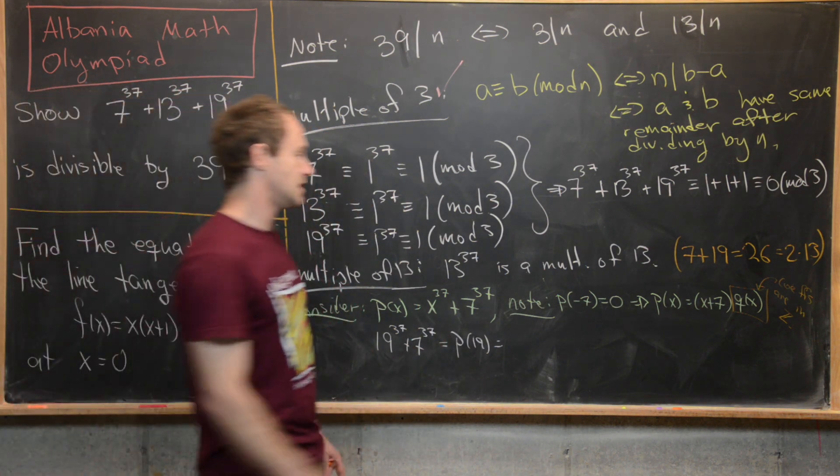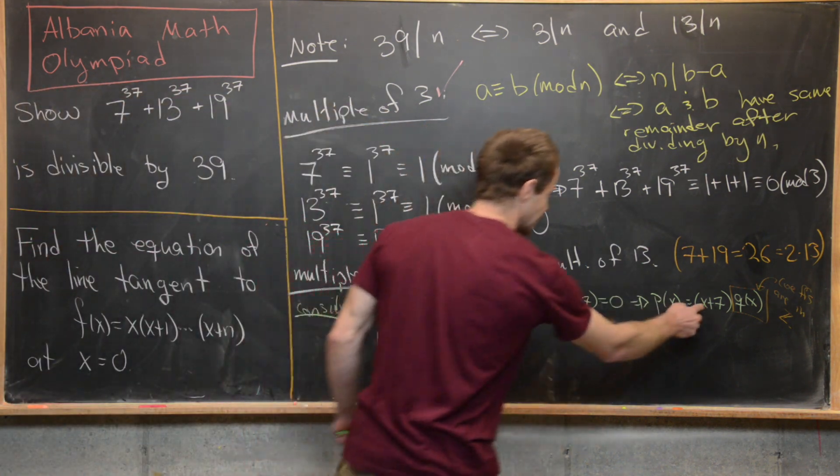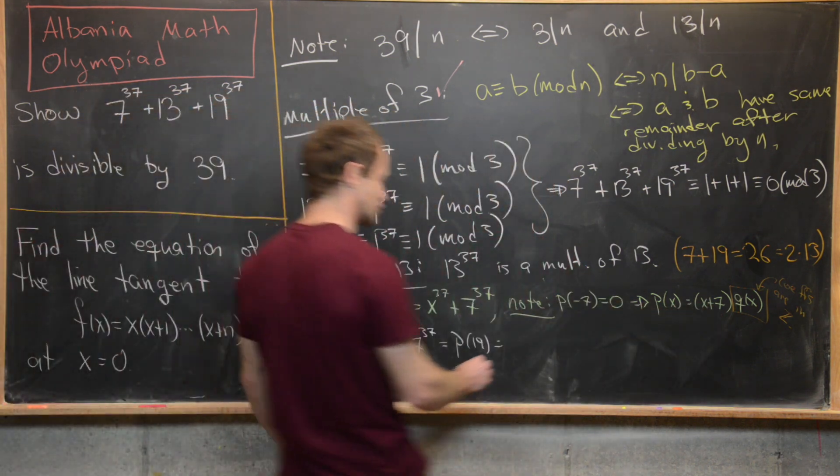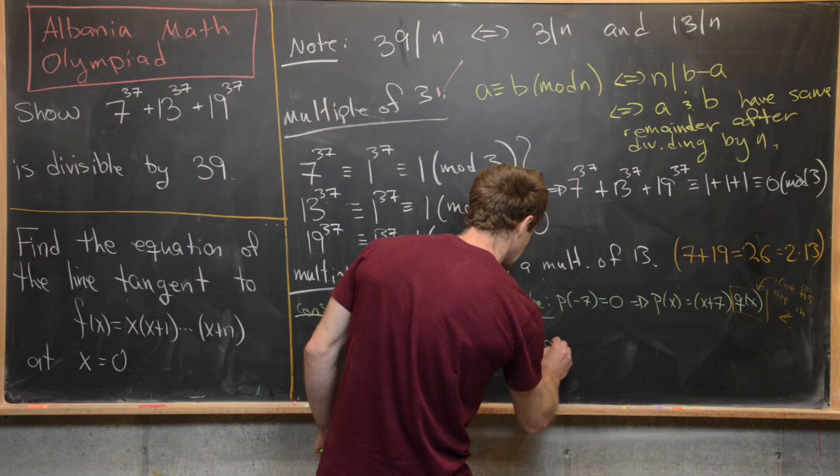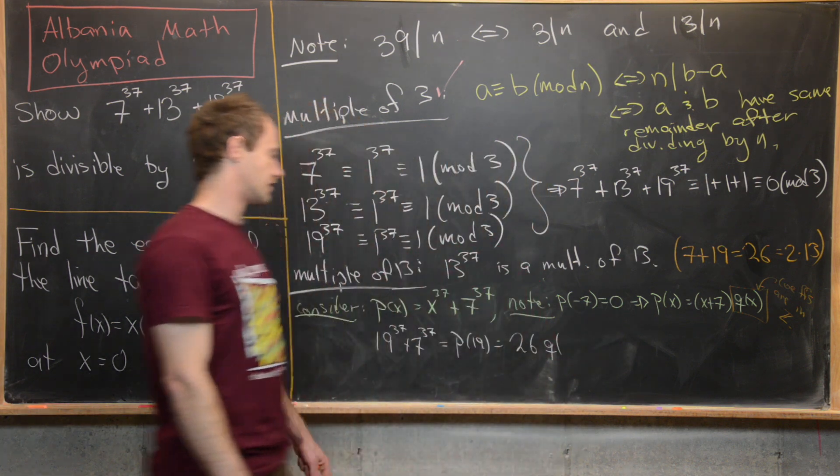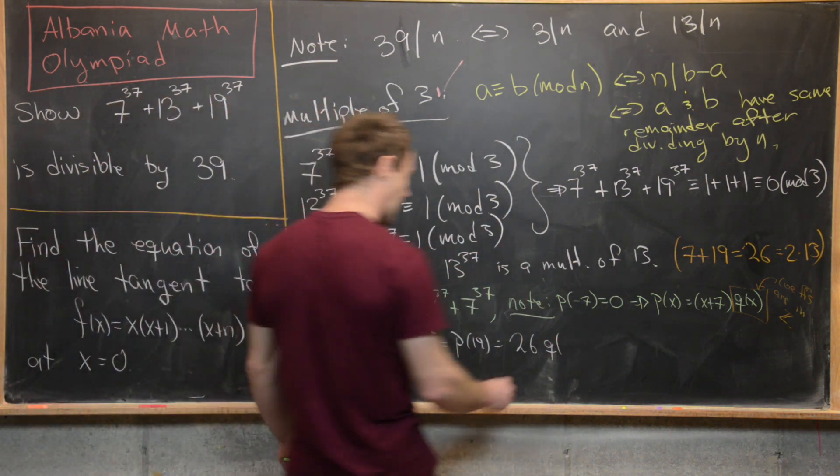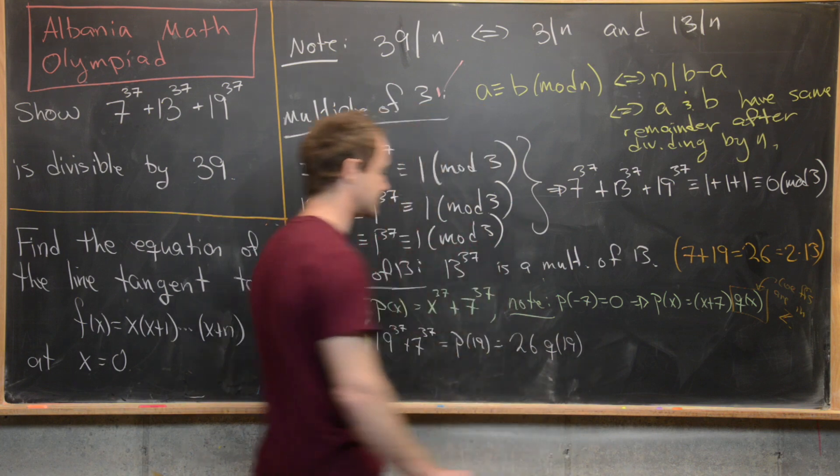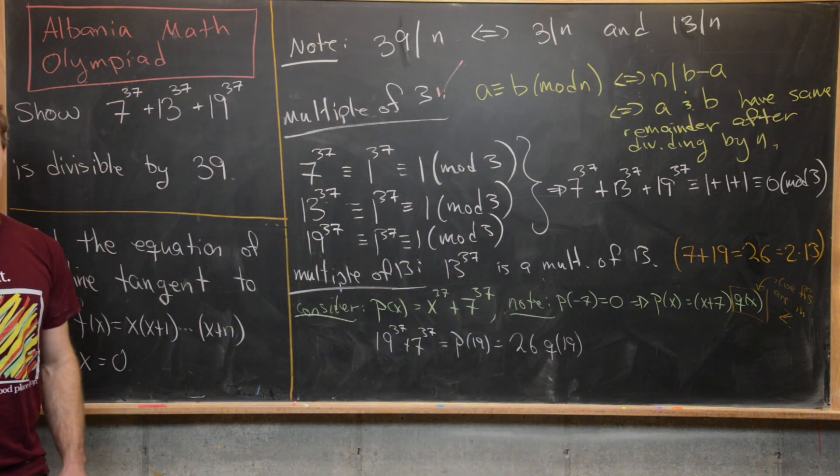But then using this factorization, that's going to be 19 + 7, which is 26 times this other polynomial q evaluated at 19. So we have something like that.